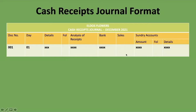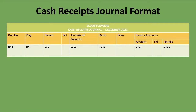The sundry account is where we record every other transaction other than sales or the columns we actually have. So if you borrowed money from the bank, someone who owed you paid you, or you sold furniture — those are not sales of merchandise, so you'd put them under sundry account. You put the amount under 'amount' and write the account name under 'details.' The sundry account is for all amounts for which you don't have a dedicated column.